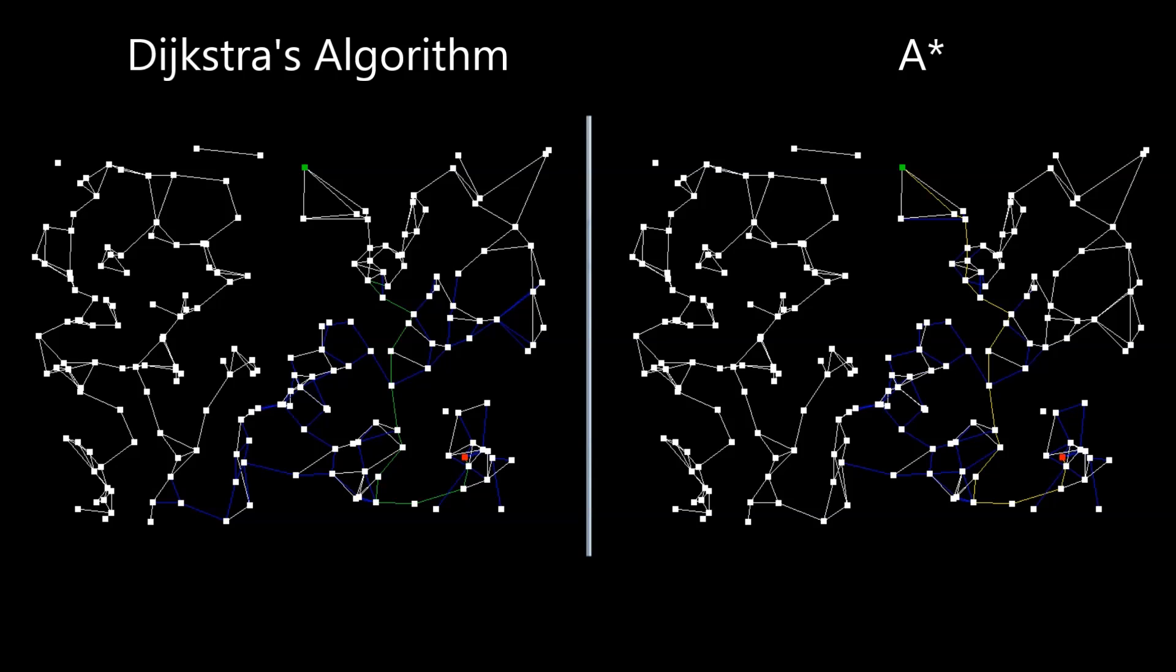On the right we have A-star, which is an improvement on Dijkstra's. Apart from traversing nodes from shortest to longest distance, it also takes the distance to the goal into account. Nodes that are close to the goal will be evaluated first.